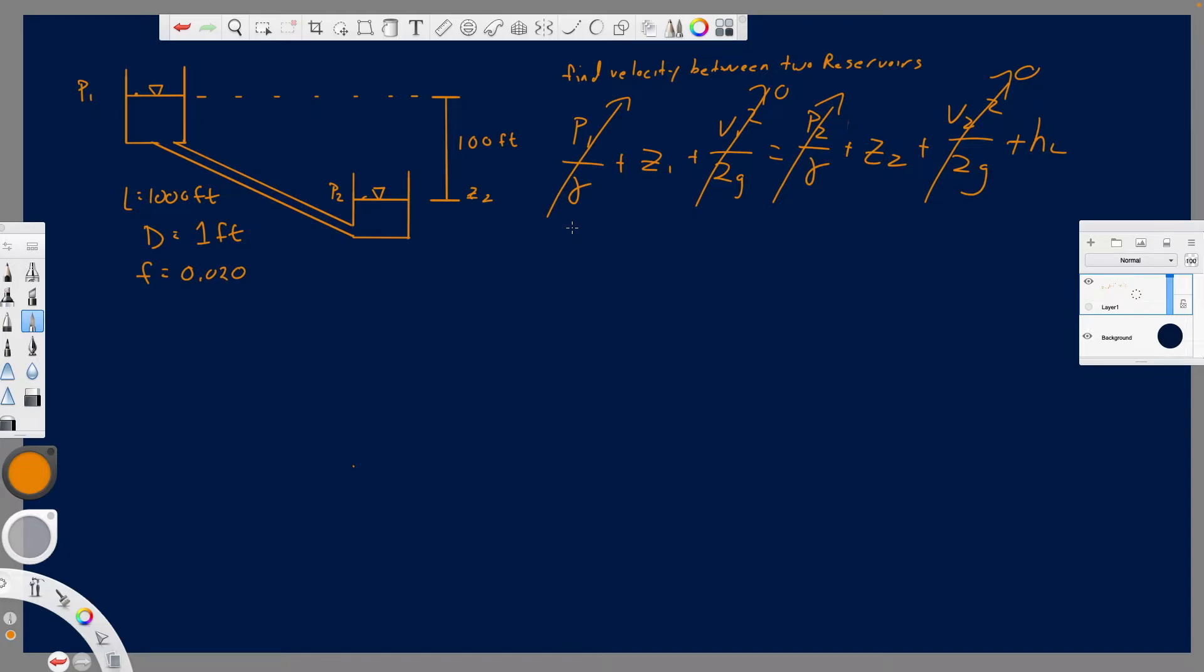What we're left with is that our head loss is going to be equal to Z1 minus Z2. If that was your question, like in the FE or something, if you were asked to find the head loss between these two points, you'd be done. It'd be 100 foot. That is a type of question that actually does come up often in the FE. But we can actually take it further. Now we know the head loss, but what kind of flow rate or velocity would cause that much head loss? Because head loss is a function of velocity.